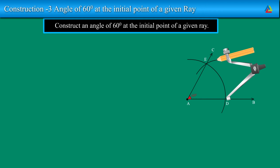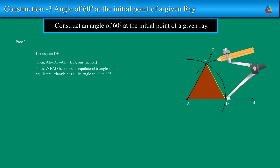Now, we will prove this. Construct an angle of 60 degrees at the initial point of a given ray. Let us join DE. Then, AE is equal to DE is equal to AD because of the virtue of construction. Thus, triangle EAD becomes an equilateral triangle. An equilateral triangle has all its angles equal to 60 degrees. Thus, angle CAB is equal to 60 degrees.